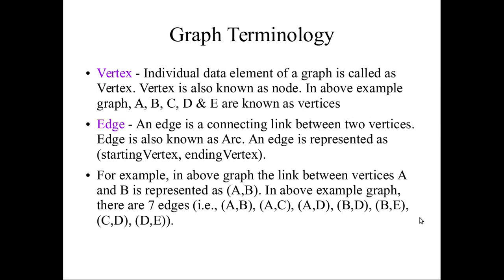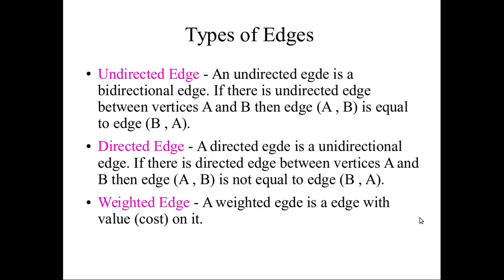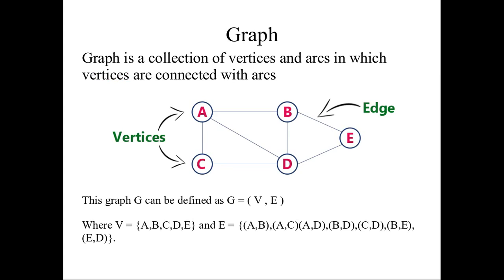Then there are types of edges, or types of connection. So there are three types: one is called undirected, another is directed, another is weighted. Undirected means the above example is mentioning undirected because the edge is not representing any direction, either from A to B or B to A. There is no direction mentioned in the edge. So these graphs are called bidirectional graphs. This is called undirected graph or bidirectional graph.